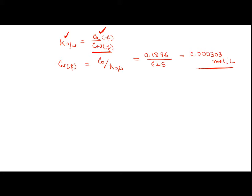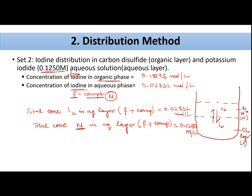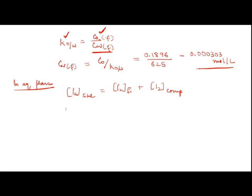In the aqueous phase: total iodine = free iodine + complexed iodine. Total iodine = 0.02832 mol/L. Free iodine = 0.000303 mol/L. Therefore, complexed iodine = 0.02832 − 0.000303 = 0.02802 mol/L.